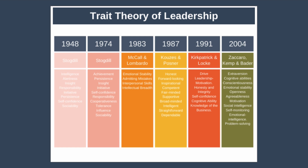Next we have Kouzes and Posner in 1987. James Kouzes and Barry Posner surveyed over 600 managers about their positive leadership experiences and identified a list of traits. Importantly, this list wasn't derived by analysing leaders' traits — instead it was derived by asking followers what qualities they saw as important in great leaders.